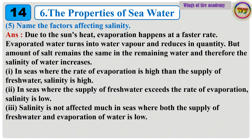Question 5: Name the factors affecting salinity. Answer: Due to the sun's heat, evaporation happens at a faster rate. Evaporated water turns into water vapour and reduces in quantity. But the amount of salt remains the same in the remaining water, and therefore the salinity of water increases. In seas where the rate of evaporation is high relative to the supply of fresh water, salinity is high. In seas where the supply of fresh water exceeds the rate of evaporation, salinity is low. Salinity is not affected much in seas where both the supply of fresh water and evaporation of water is low.